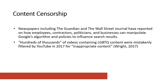Those are examples of how the algorithm may prioritize or deprioritize some kinds of content. But also be aware that Google and other search engines at times take active steps to censor content or give priority to other content. Newspapers from across the spectrum — including the Guardian and the Wall Street Journal — have done big reports on how employees, contractors, politicians, and businesses can manipulate Google's algorithm and Google's own internal policies to influence search results.